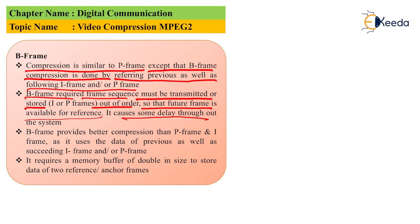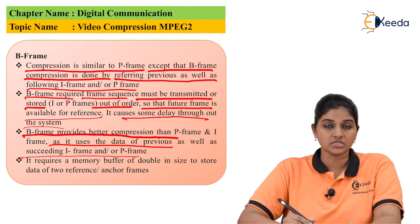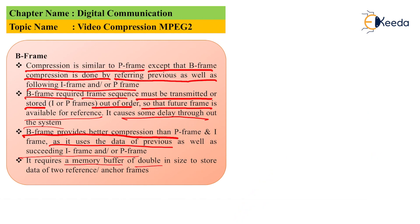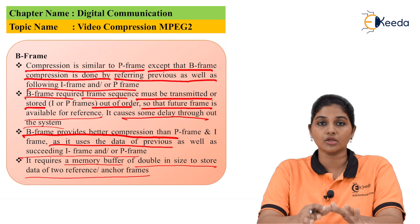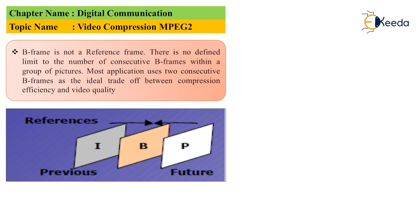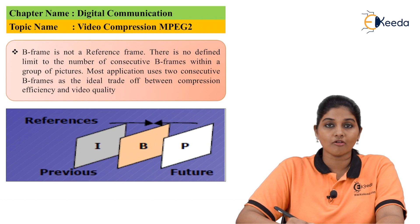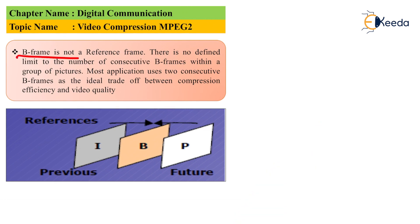B-frame causes some delay throughout the system. B-frame provides better compression compared to P and I frames, as it uses data from both preceding and following P or I frames. It requires memory buffers of double size to store the data of two frames, since both preceding and following frames are used. A B-frame is formed using a previous I-frame and a following P-frame, and because it stores data of two frames, it requires a double-size buffer.